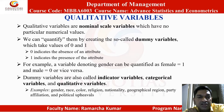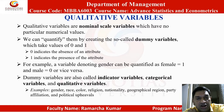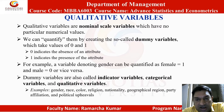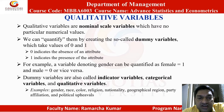Dummy variables are also called indicator variables, categorical variables, or qualitative variables. Examples include gender, race, color, religion, nationality, geographical region, party affiliation, and political variables.